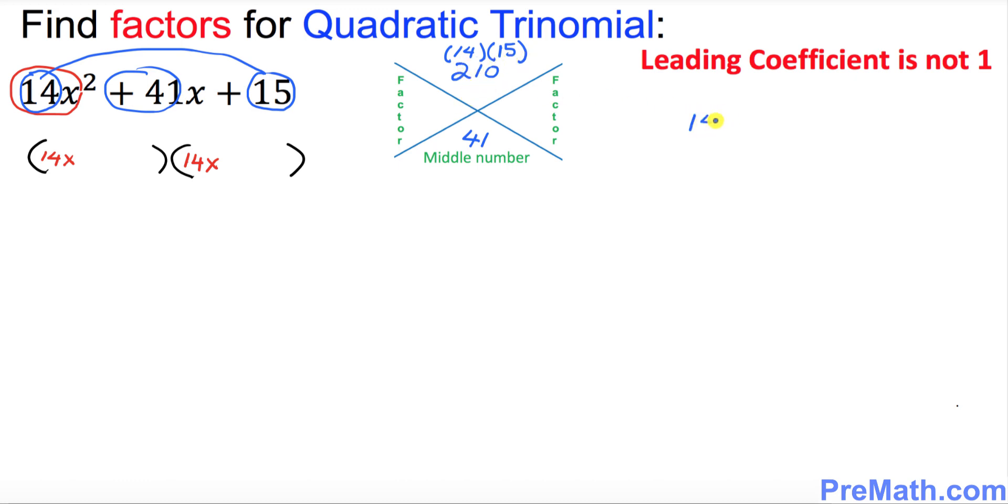I want you to put down 14 times 15. I want you to find the factors for 14 which is 7 times 2. And let's look for the factors for 15 which is 3 times 5.